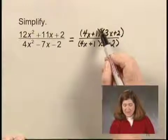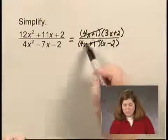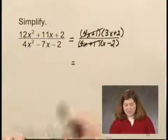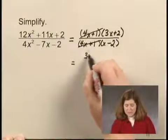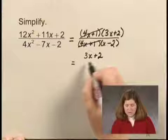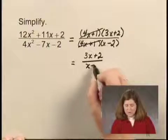So I can cancel those or remove a factor equal to 1 and write that the simplified form is 3x plus 2 over x minus 2.